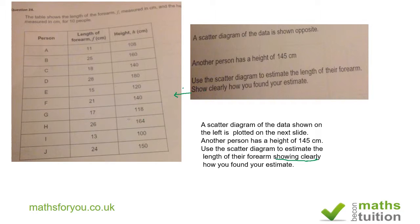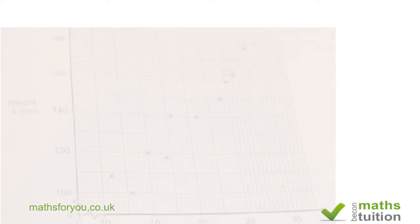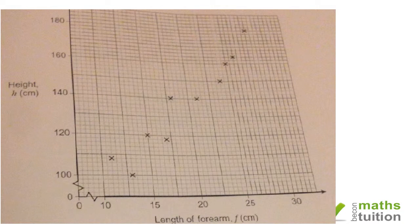Moving on, my scatter diagram is this one here. In the next slide I'm going to use the information for person H. This person has a height of 164 centimeters and a forearm length of 26 centimeters.